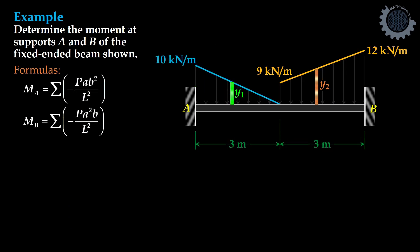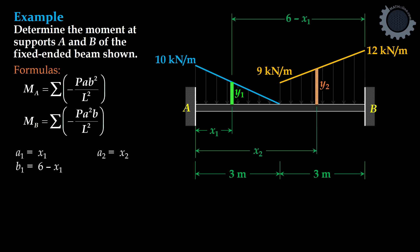To find the other elements, we have A equal to X1, B1 equal to 6 minus X1, A2 is equal to X2, and B2 is 6 minus X2.